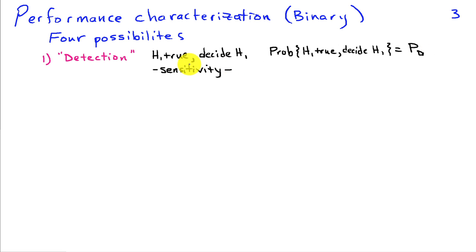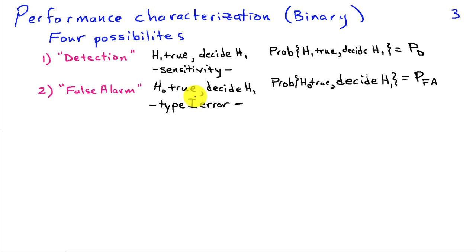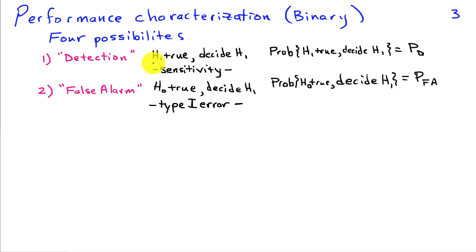In the medical community, this is known as sensitivity — the probability that we correctly decide H1. A so-called false alarm occurs when H0 is true and we decide that H1 was true. The probability of a false alarm is the probability that we decide H1 when H0 was really true, and in the statistics literature this is called a type 1 error. These terms have a radar origin: we want to correctly detect an incoming aircraft, or we suffer a false alarm because we think an aircraft is coming when in actuality there's not.